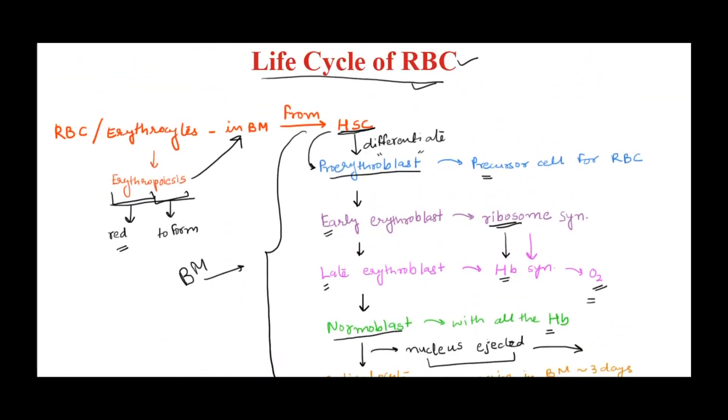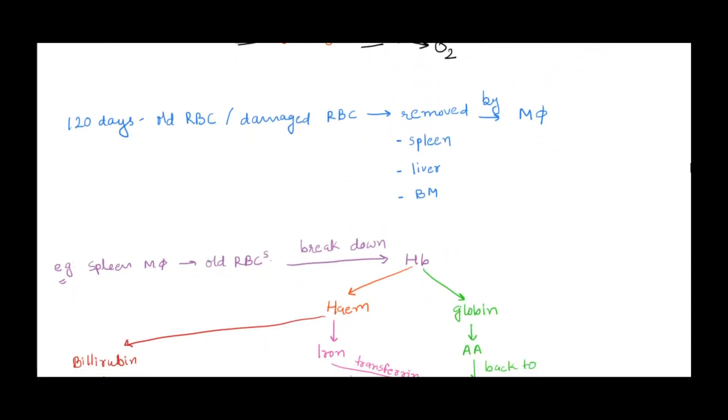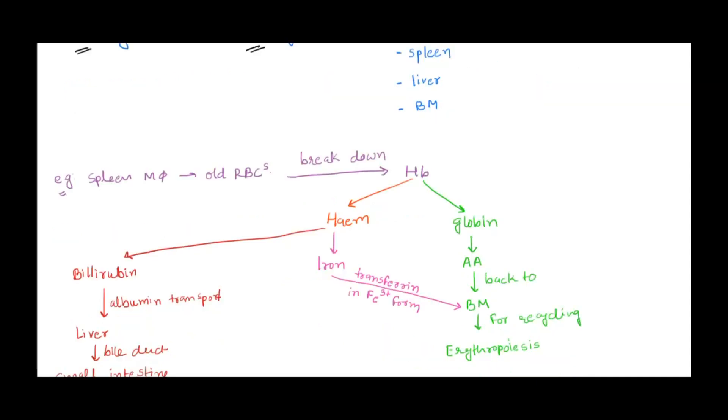So that's erythropoiesis, from hematopoietic stem cell to RBC. Now let's see - once RBCs are formed and done with their 120-day life cycle, or if they're damaged for any reason, these damaged or old RBCs have to be removed from circulation. When such cells need removal, macrophages come into the picture.